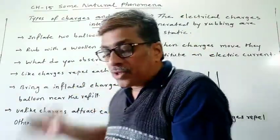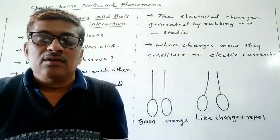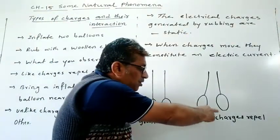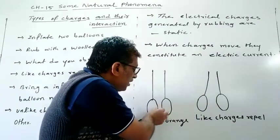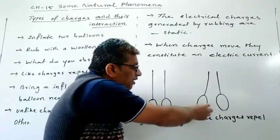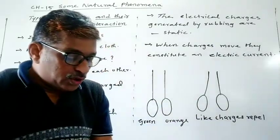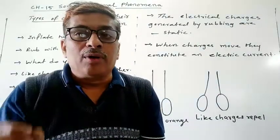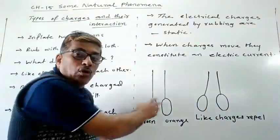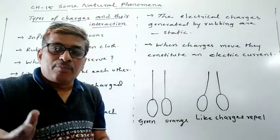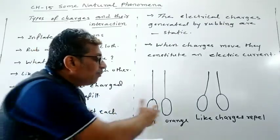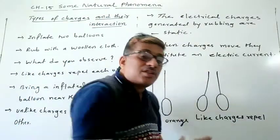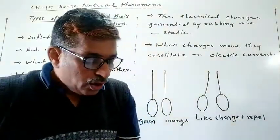After rubbing both balloons with the woolen cloth, release them and observe. You will see that the second balloon moves away from the first. They were close to each other, but now they move away. This means like charges repel each other. Because we rubbed both balloons with the same cloth, they acquired the same charge — whether positive or negative — and they move away. So, like charges repel each other.